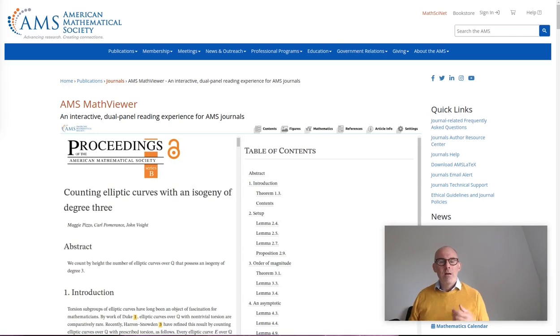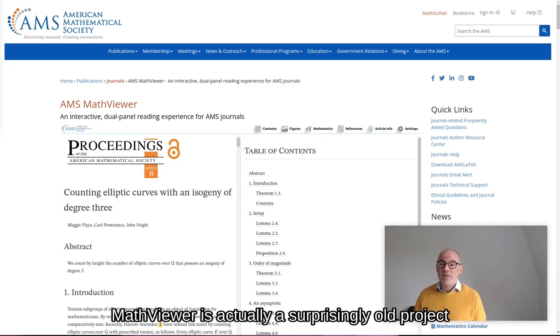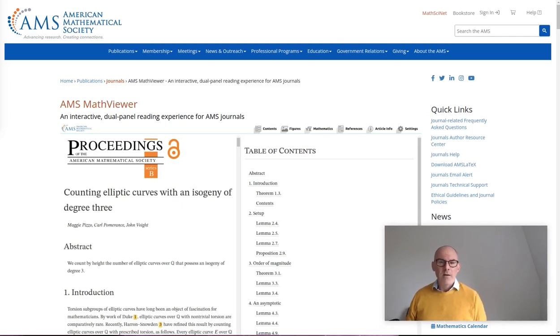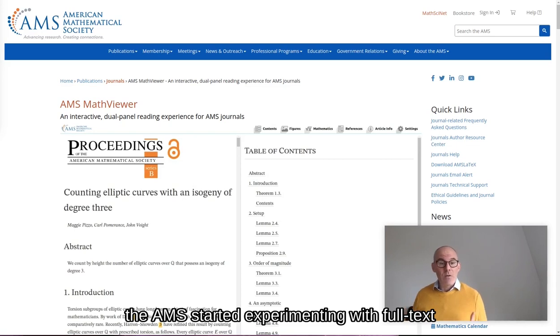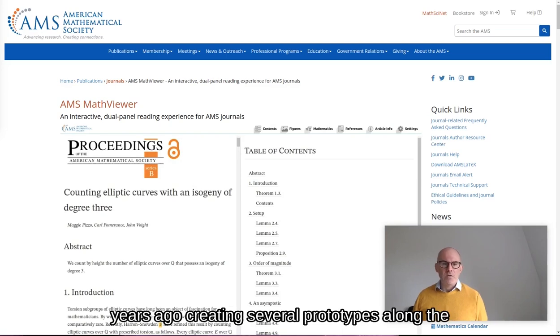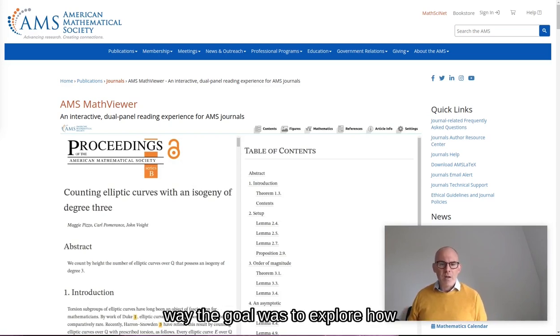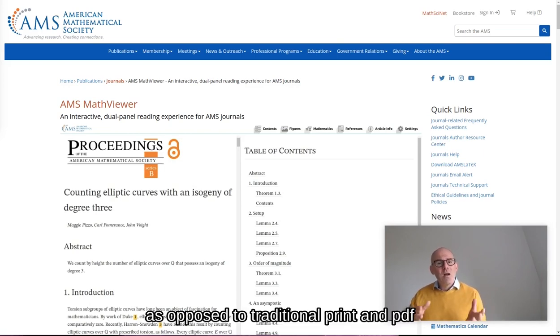Let's get started. MathViewer is actually a surprisingly old project. The AMS started experimenting with full-text HTML for articles and books roughly 10 years ago, creating several prototypes along the way. The goal was to explore how the specifics of AMS content could be presented well on the medium that is the web, as opposed to traditional print and PDF presentation.